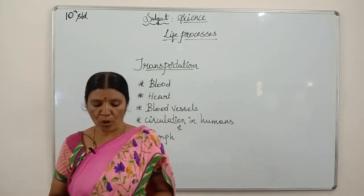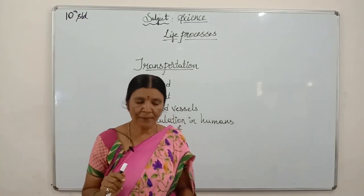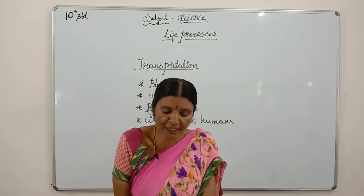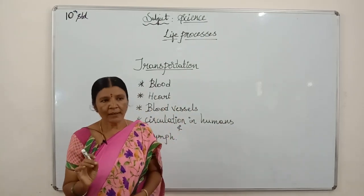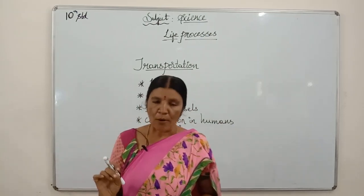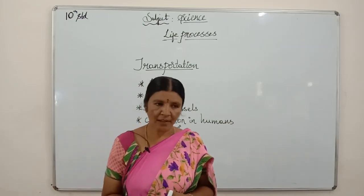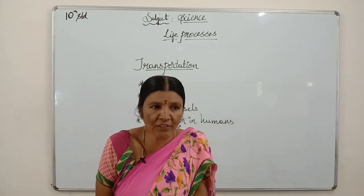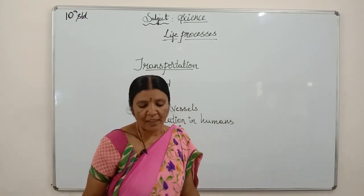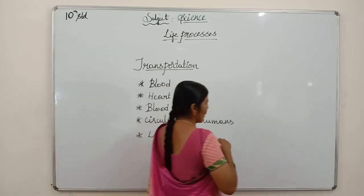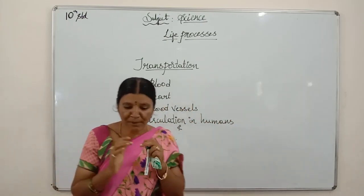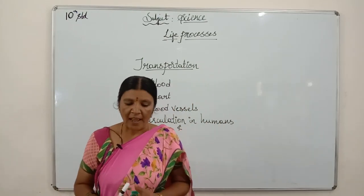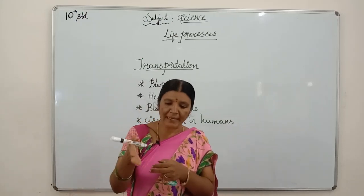One small question to you all: Why are human red blood cells biconcave in shape? They are biconcave in shape because they have maximum surface area, so that they can carry more oxygen and also they can squeeze into the blood capillaries.